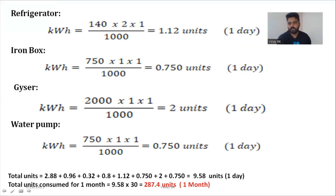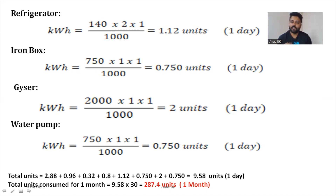To calculate per month, multiply the daily units by 30 or 31 depending on the month — 31 for January, 28 for February, and so on. As an assignment, try to observe all the electrical appliances in your home, find their power ratings, measure how much time you use each appliance per day, calculate for 30 days, and you can easily predict your electricity bill amount.